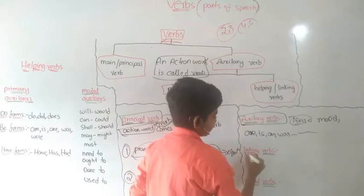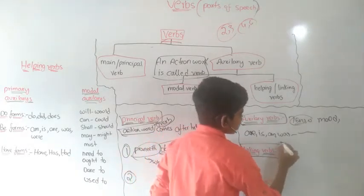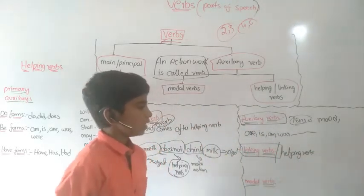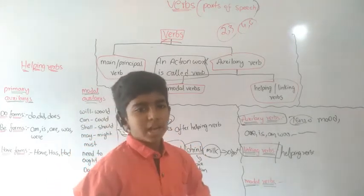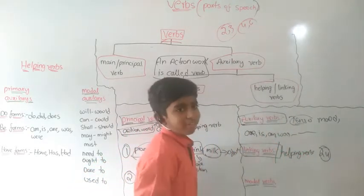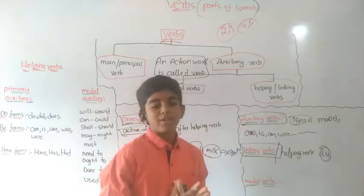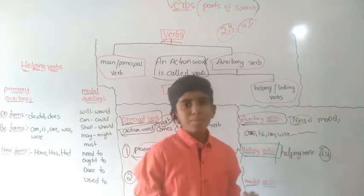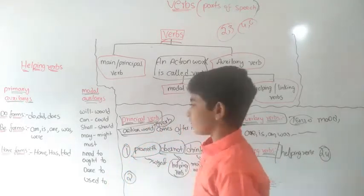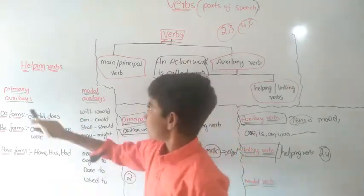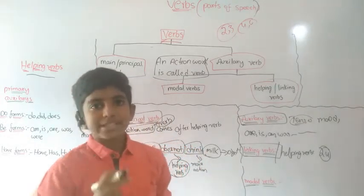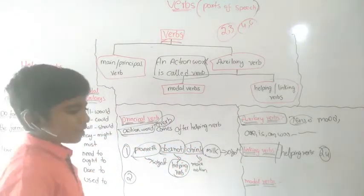In this auxiliary verb category, we also have linking verbs. Linking verbs are nothing but helping verbs. There are 24 helping verbs in English grammar. These 24 helping verbs are also called linking verbs. These 24 helping verbs are divided into two parts. Write these in your notes.